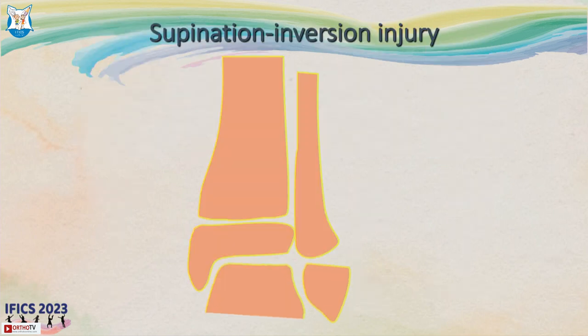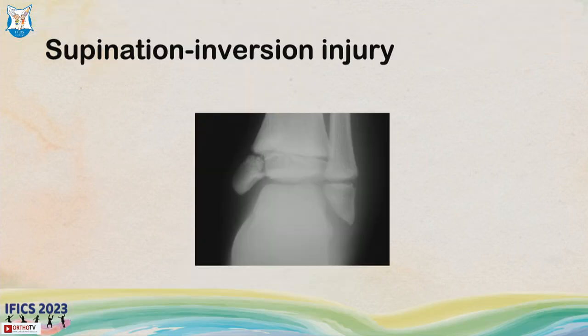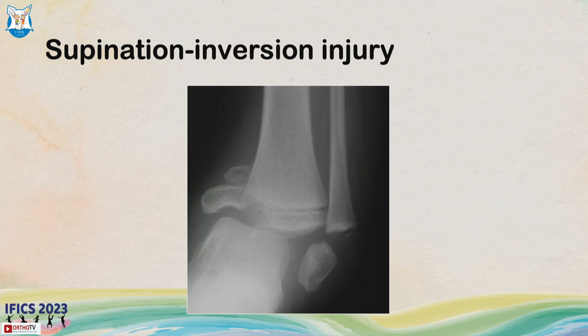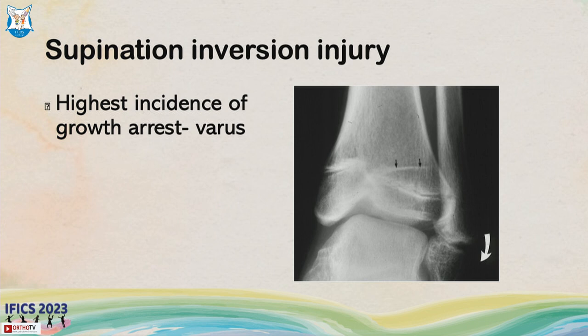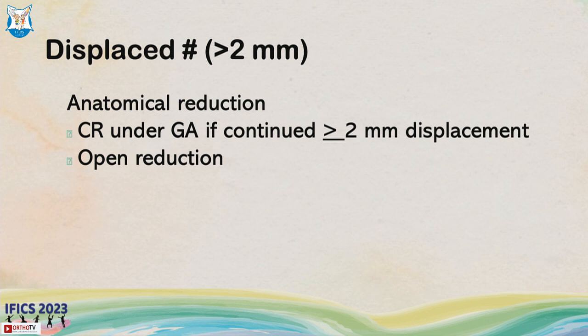In supination inversion, the fibula goes first, then the talus inverts within the mortise and knocks the medial malleolus off — resulting in a Salter-Harris type 3 fracture. These are deceptively simple injuries but have a very high rate of growth arrest and secondary displacement. If minimally displaced under one millimeter, treat with casting and close radiographic supervision, but in the vast majority, a single percutaneous intra-epiphyseal screw gives anatomical reduction.